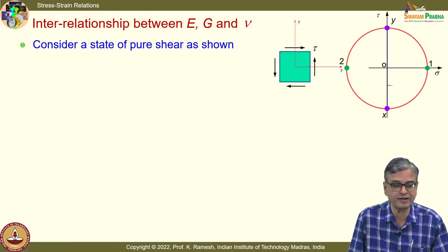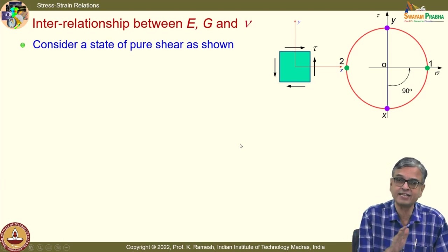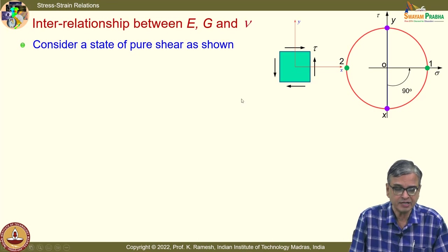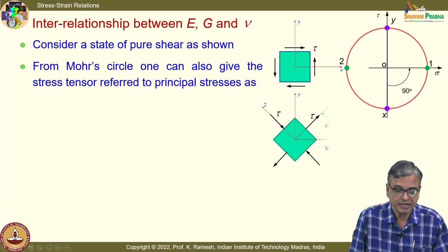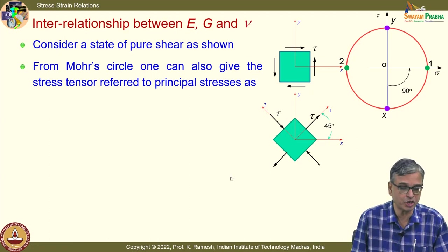If you develop the interrelationship — and for that we used the Mohr circle of stress and strain — for an isotropic material, if you scale appropriately, the principal stress directions are the same as principal strain directions. By looking at pure shear stress as a combination of tension and compression and invoking stress-strain relations, it is possible to establish an interrelationship between Poisson's ratio, Young's modulus, and shear modulus.